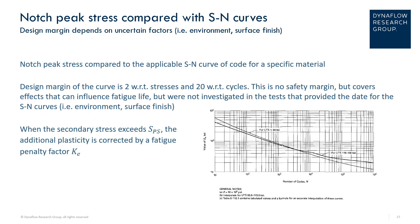This slide shows the notch peak stress compared with the SN curves. We can compare the notch peak stress to the applicable SN curve for the specific material. The vertical axis of this SN curve is the stress amplitude, and the x-axis is the allowable cycles before high cycle fatigue will occur. The design margin of the curve is 2 with relation to stresses and 20 with relation to cycles. Again, this is not a safety margin, but covers effects that can influence fatigue life that were not initially investigated in the tests providing the SN curve data.